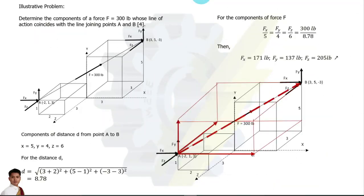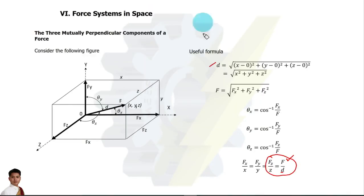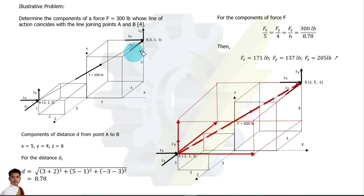Let us have an illustrative problem from the book of Ferdinand Singer. We have force F of 300 pounds whose line of action coincides with the line joining points A and B. In the first figure we had the origin and point xyz, but here we have point A to point B, so it is no longer from the origin. Before we can use our formula, we need to identify the dimensions of the rectangular parallelepiped that can be formed from the given points.